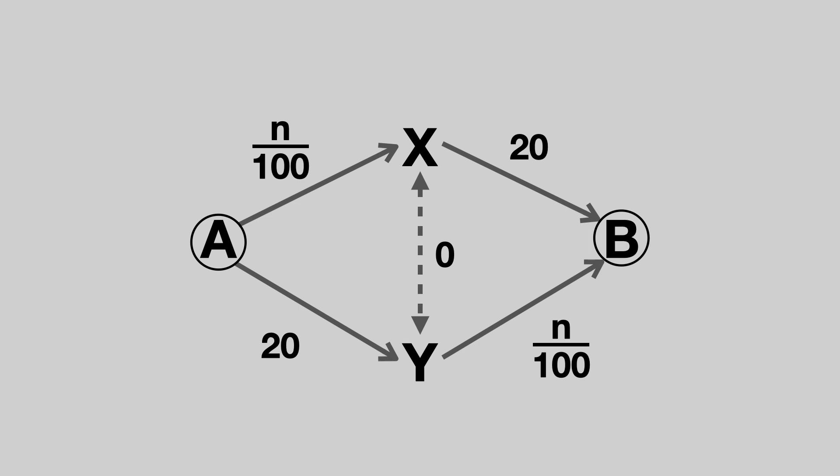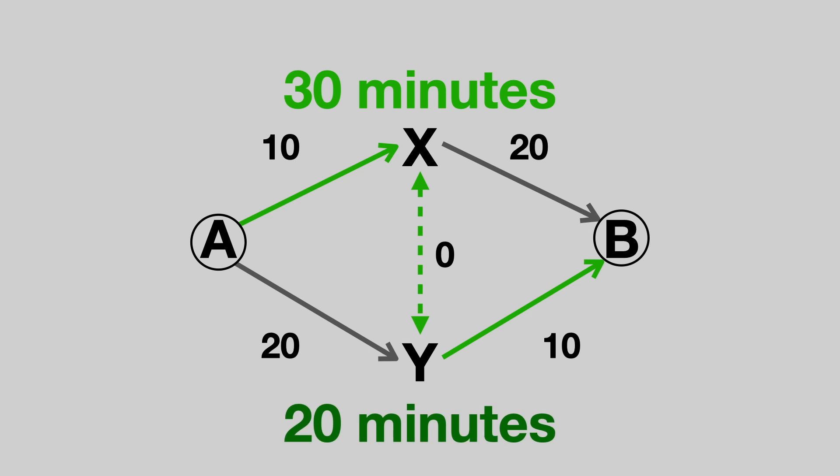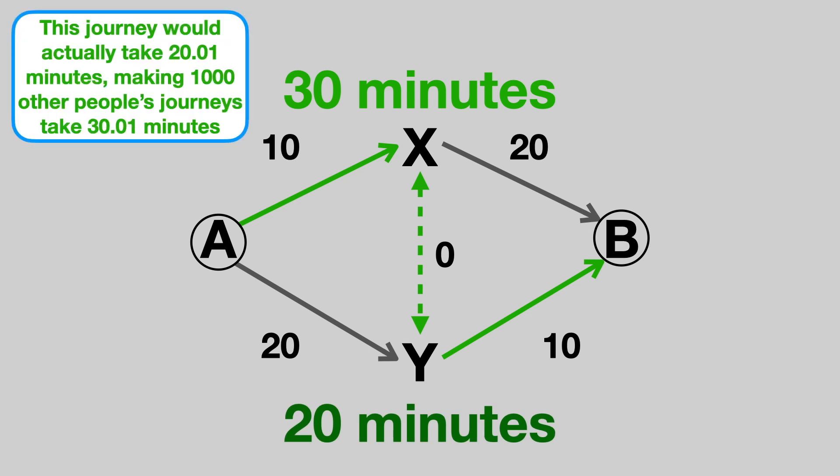It would benefit everyone to cooperate and agree not to use the road XY. We would then go back to 30-minute journey times. However, there would always be an incentive for someone to deviate from this and reduce their journey by 10 minutes. This deviation would be in their own self-interest, but it would make other people worse off by increasing congestion.